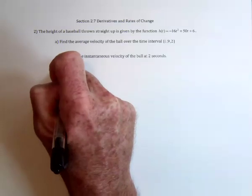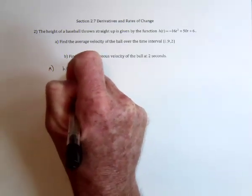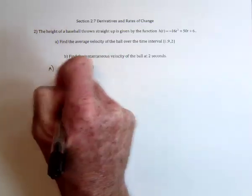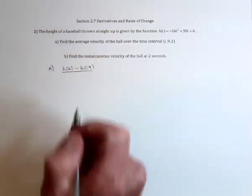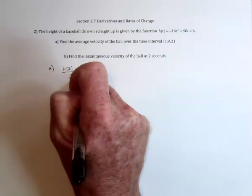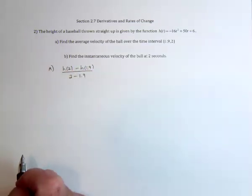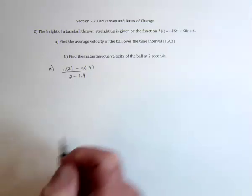So we've got the height at 2 seconds minus the height at 1.9 seconds is how far it went up or how far it dropped over that time interval. And if you subtract the 2, you can find out that it took 0.1 seconds in order to do that.